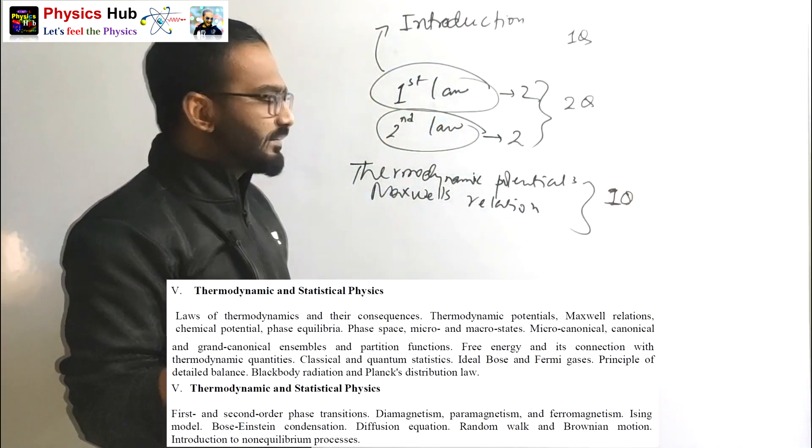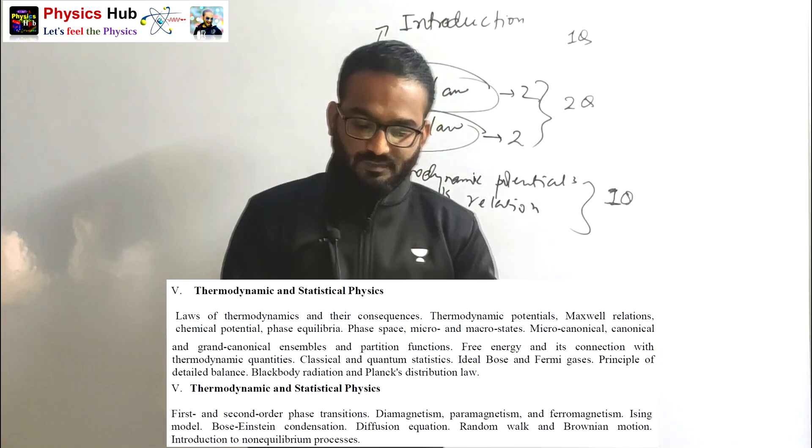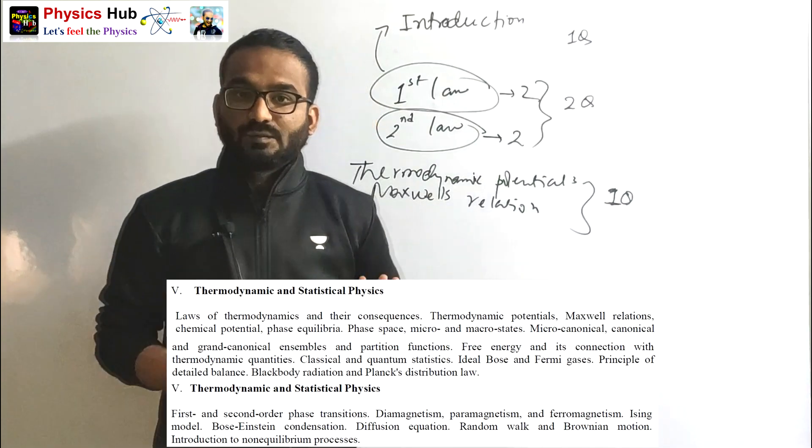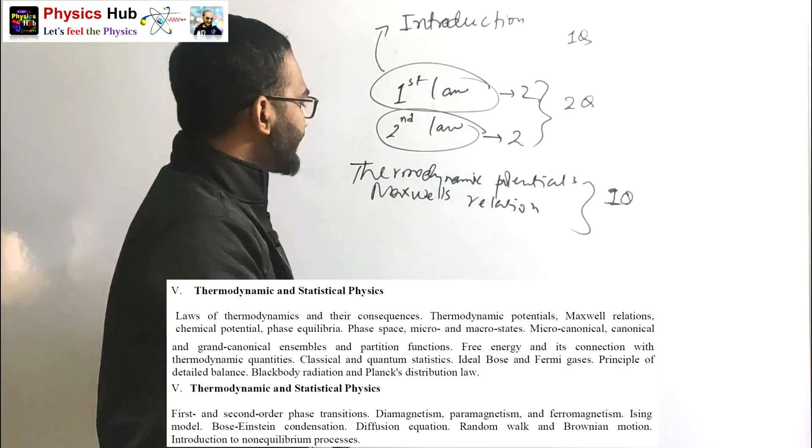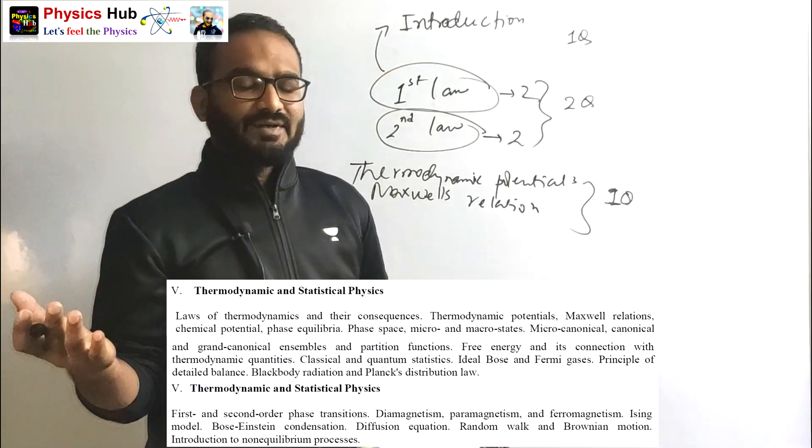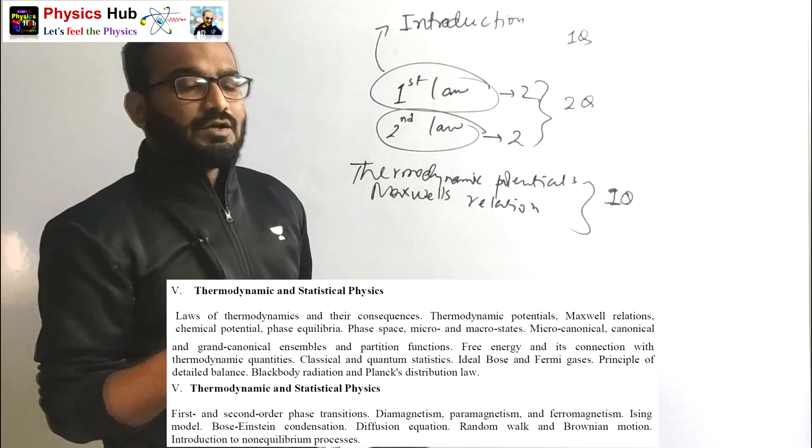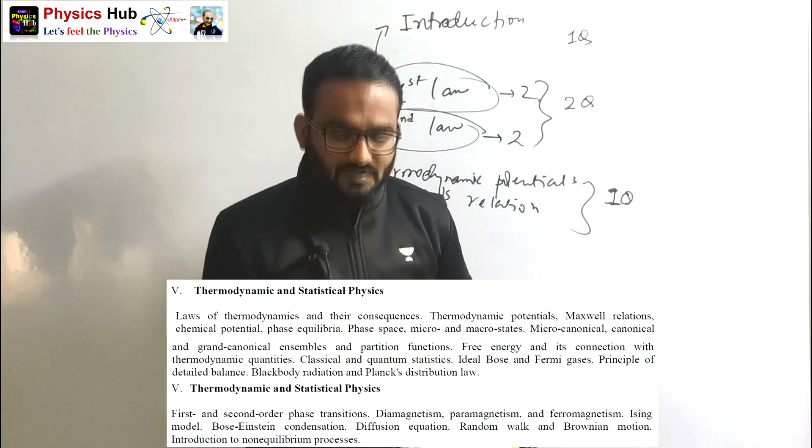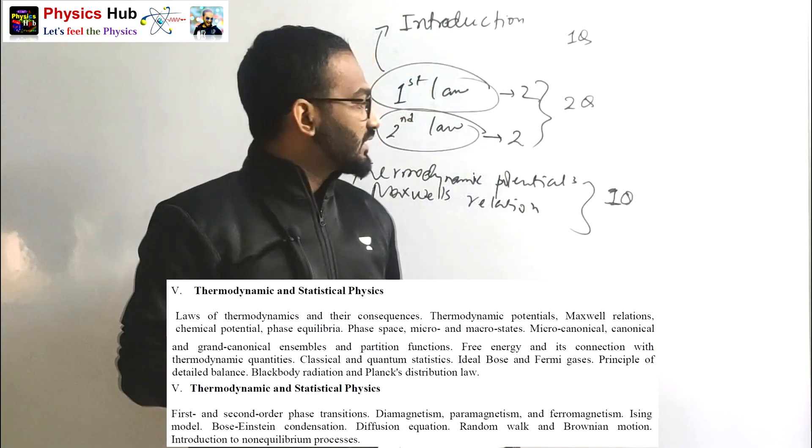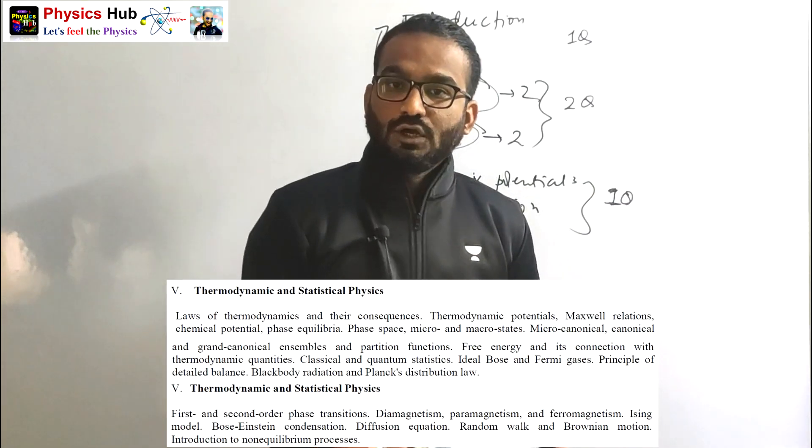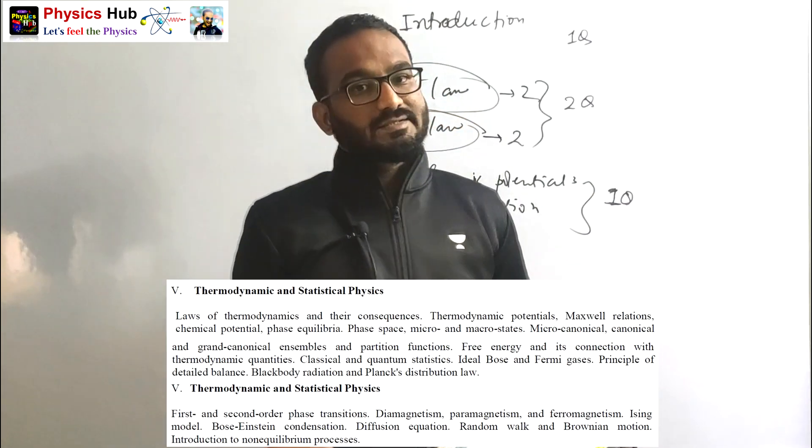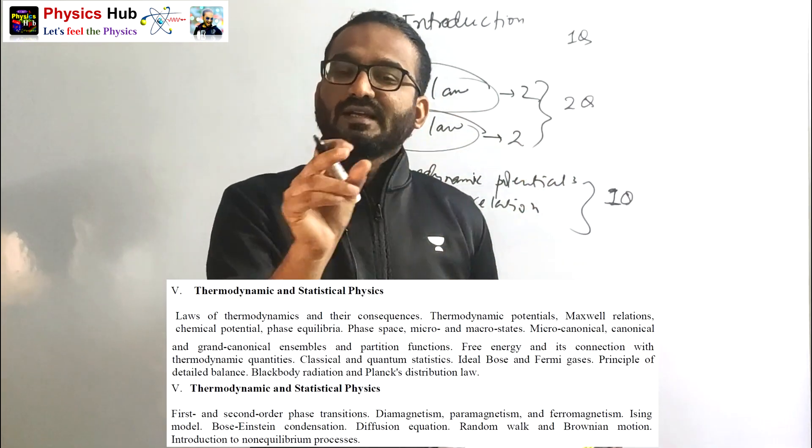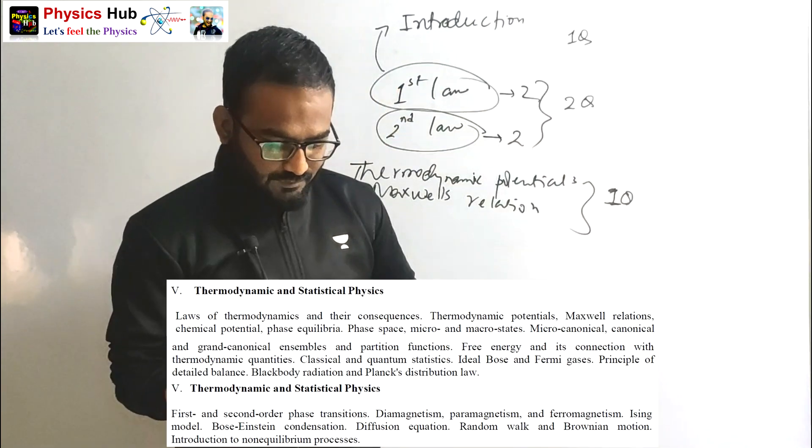Next: phase equilibrium, phase space, micro and macro states, microcanonical, canonical, and grand canonical ensembles. The ensemble part is very important - you can definitely expect one question, 3.5 marks or 5 marks, from canonical. Most of the time questions come from canonical ensemble, but in recent years questions are coming from grand canonical ensemble also. So we have to give special stress on all three ensembles, but most importantly on canonical and grand canonical.